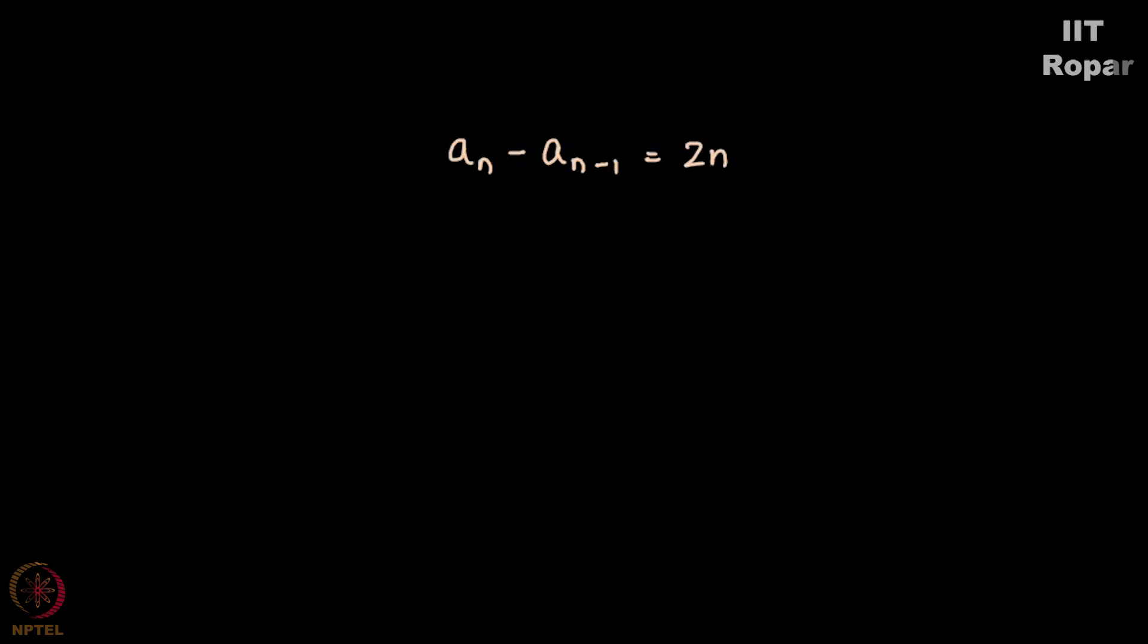So this is the recurrence relation for the sequence 0, 2, 6, 12, 20 and so on. Now we have found out the recurrence relation for the sequence, but wait a minute we can do something more here.